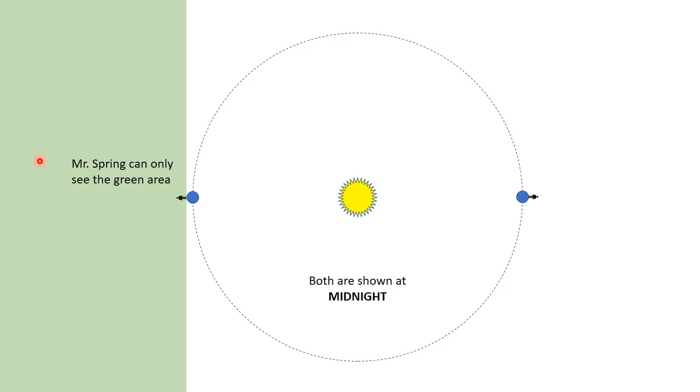This is the region Mr. Spring can see. So these are the stars you can see in the spring. And here's the fall and the horizon. This is the region Mr. Fall can see. And it would appear from this diagram that there are no stars that they can both see at the same time.